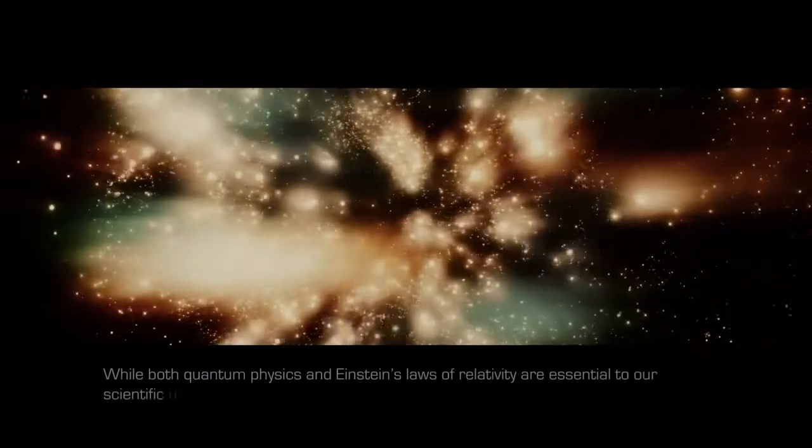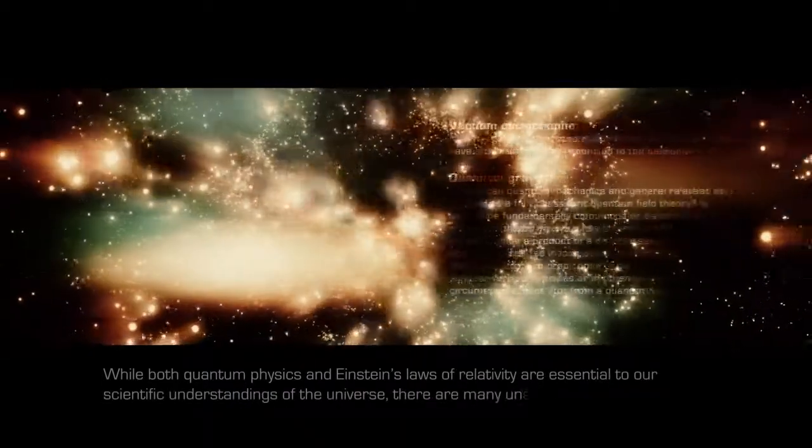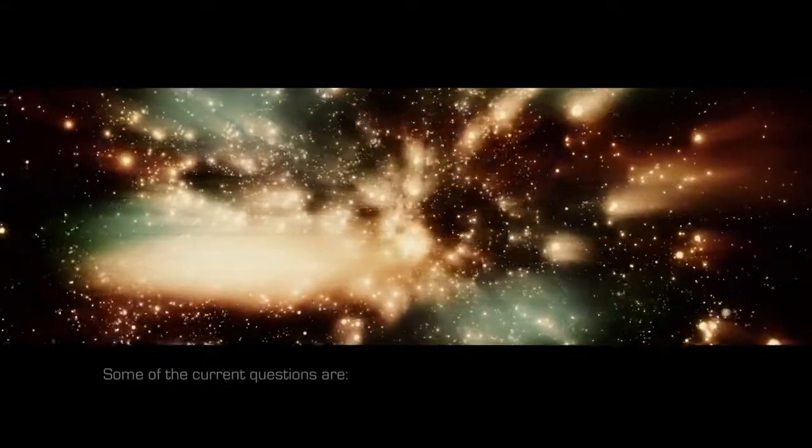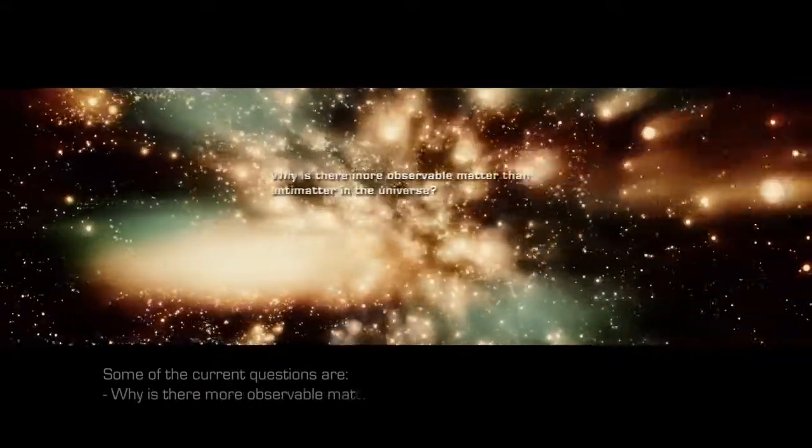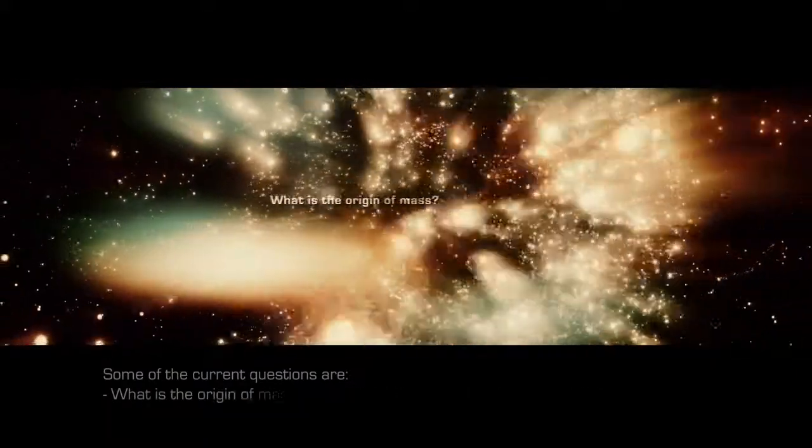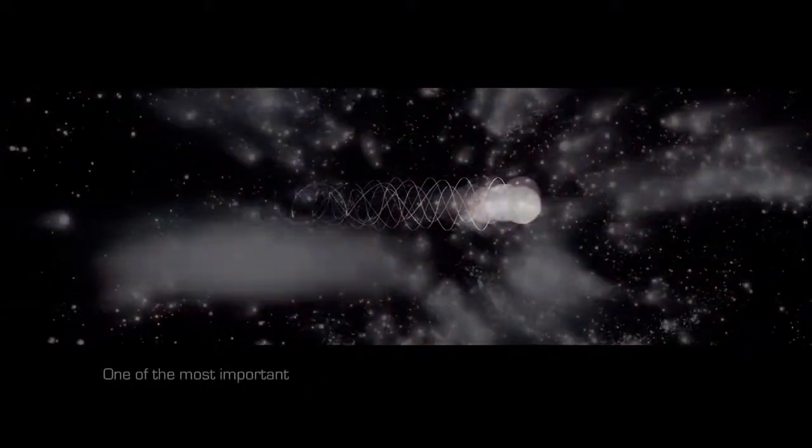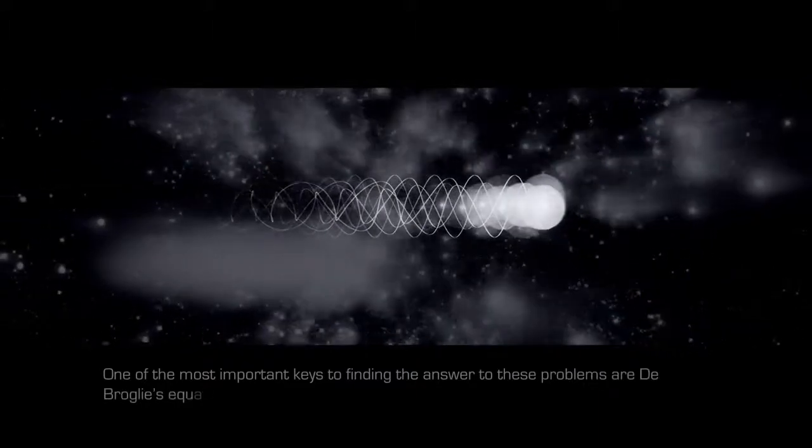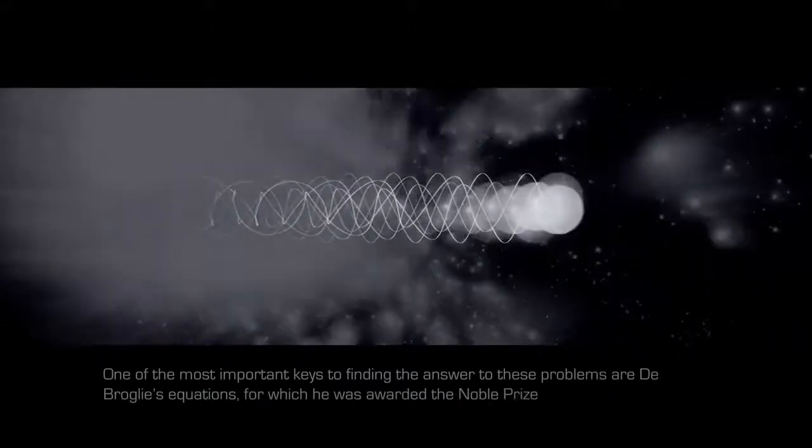While both quantum physics and Einstein's laws of relativity are essential to our scientific understandings of the universe, there are many unsolved scientific problems and thus far no unifying theory. Some of the current questions are, why is there more observable matter than antimatter in the universe? What is the nature of the arrow of time? What is the origin of mass? One of the most important keys to finding the answer to these problems are de Broglie's equations, for which he was awarded the Nobel Prize in Physics.